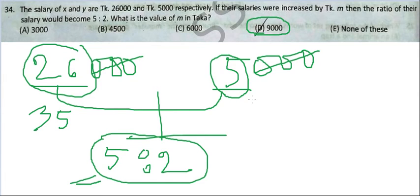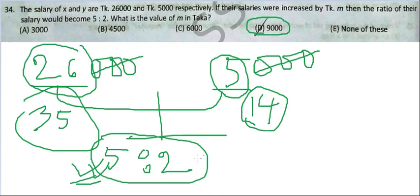And 5 plus 9 appears to be 14. So 7 into 5 is 35, that's why it's 5 in this side, and 7 into 14, so it appears to be in this side.